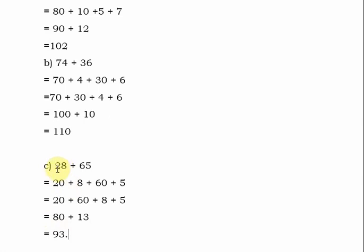We have done the breaking of numbers as asked. We break the numbers into tens and ones: 28 is written as 20 plus 8, and 65 is 60 plus 5. Then we write the tens together — 20 plus 60 — and the ones together — 8 plus 5. 20 plus 60 gives 80, and 8 plus 5 is 13.